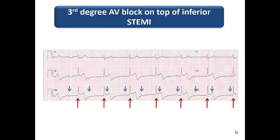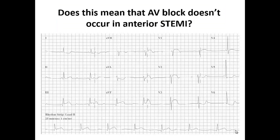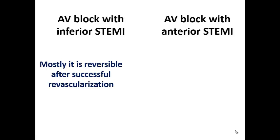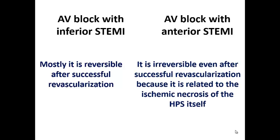Can complete heart block occur in anterior STEMI? Yes. Combined ST elevation in inferior and anterior leads can be associated with complete AV dissociation. In anterior STEMI, the culprit is usually the LAD, which gives origin to septal perforators supplying the bundle branches and fascicular branches within the interventricular septum. This leads to an infrahisian AV block pattern. However, in anterior STEMI, the AV block is usually irreversible even after successful revascularization, because it is related to ischemic necrosis of the His-Purkinje system.